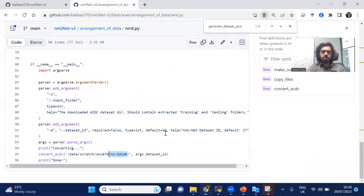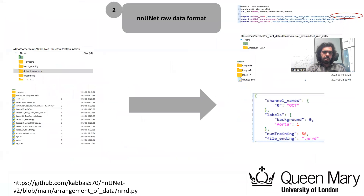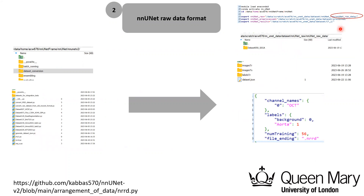You can use an existing script or write your own. After completing these steps, the raw dataset will be saved to the specified raw data folder. A folder named 'Dataset_50_SegA' will be generated, containing subfolders for training images, testing images, training labels, and a dataset JSON file describing the modality, labels, number of training examples, and file extension. Even if all subjects are used for training (with five-fold cross-validation), the testing images folder will simply be empty.